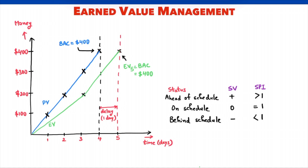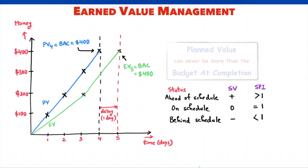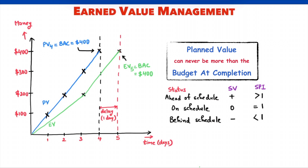What about the planned value? The plan was to complete the project in 4 days, so BAC is $400. Planned value at the end of day 4 is also $400. Planned value can never exceed BAC — after day 4, planned value will remain constant at $400. Planned value at the end of day 5 will also equal BAC, or $400.